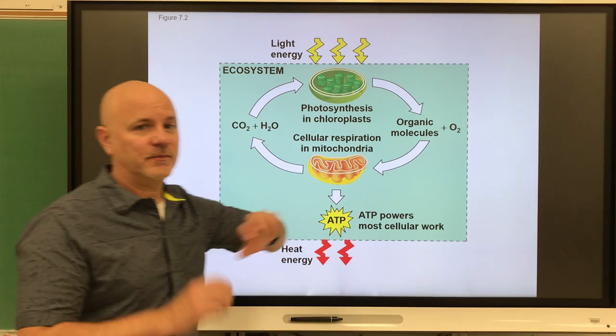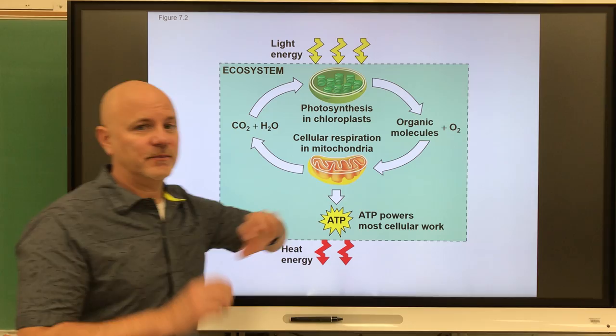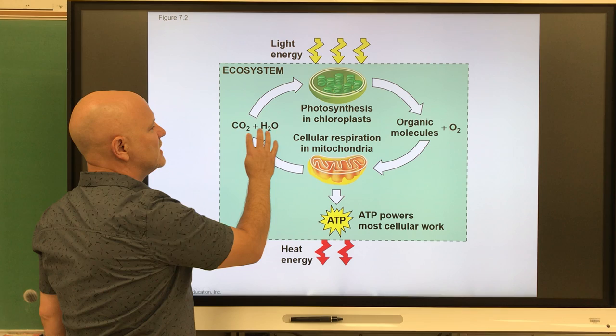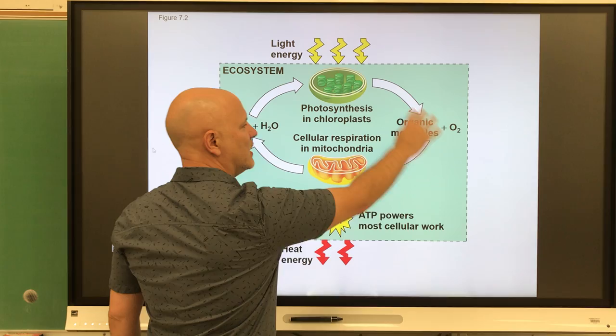This part is cellular respiration, and this part is photosynthesis. In cellular respiration we're going to look at how we take organic molecules with oxygen and break them down to produce energy — ATP. In photosynthesis we're going to look at how we take carbon dioxide and water with light energy and make organic molecules.